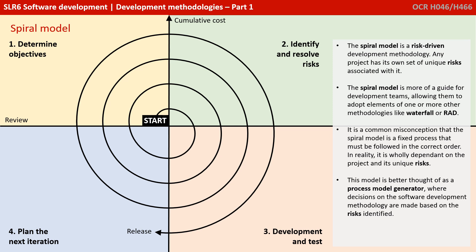Next is the spiral model, which is often misunderstood. The most important thing to realise is that the spiral model is a risk-driven software development process model. Any project you embark on has its own unique set of risks. The spiral model is really more of a guide to development teams, allowing them to adopt elements of one or more other methodologies such as waterfall, RAD, or Agile. It is a common misconception that it is a fixed process model. It is better thought of as a process model generator, where choices on the actual methodology are chosen based on the risk identified.